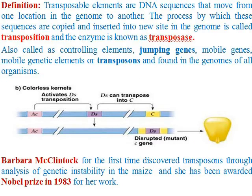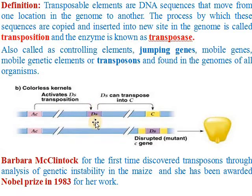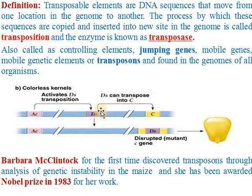First of all, these are the DNA sequences which move from their original position to another position within the genome. This can be between the same chromosomes and different chromosomes. In this diagram you will see these are DNA sequences. Here you will see AC and DS elements. This DNA sequence which moves from its original position to another position is called a transposon or jumping gene. The enzyme responsible for this DS element to transfer to another site is called transposase.